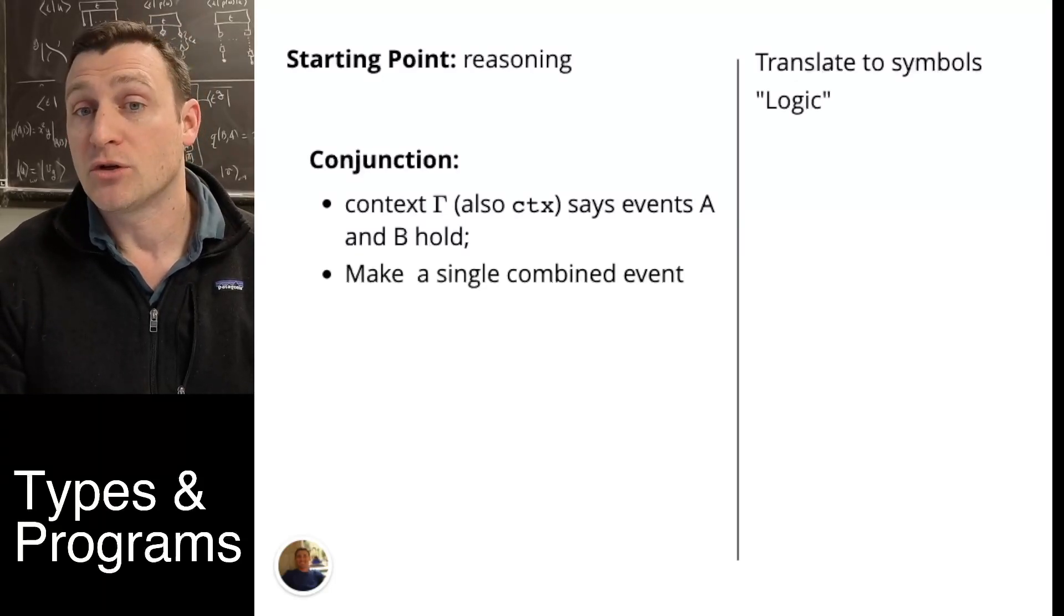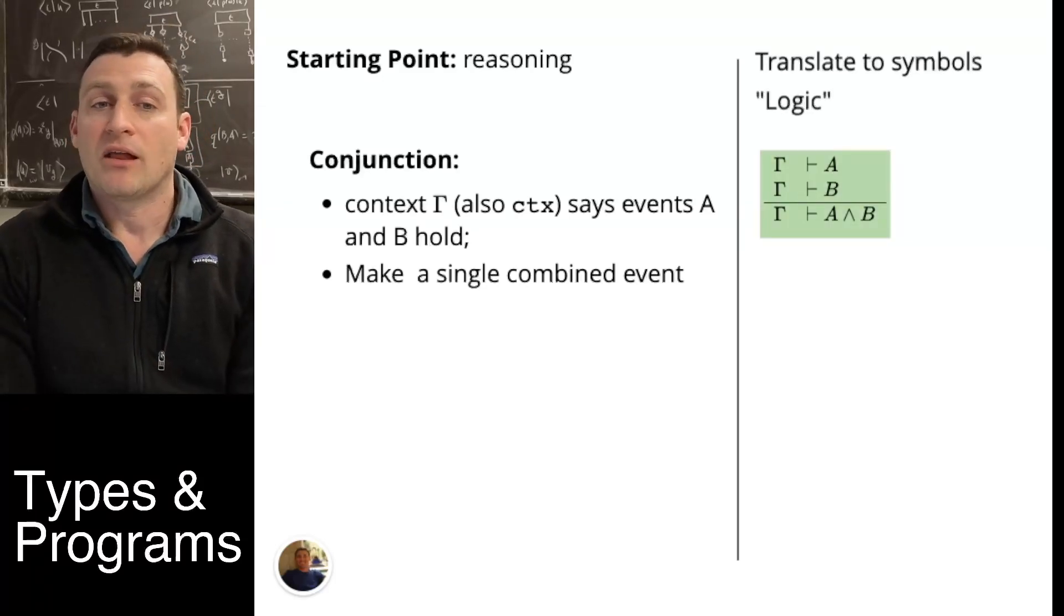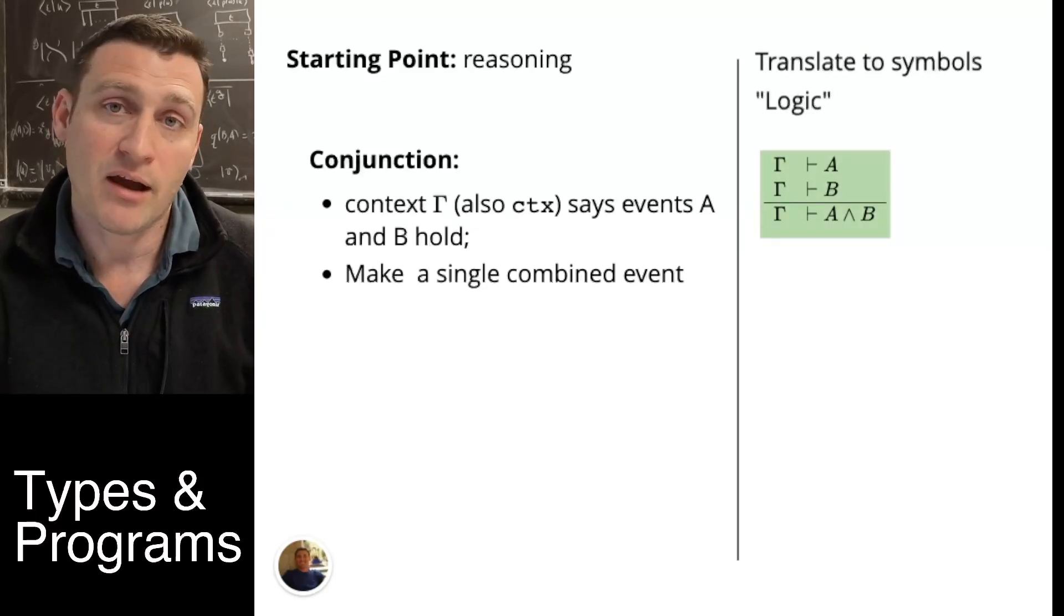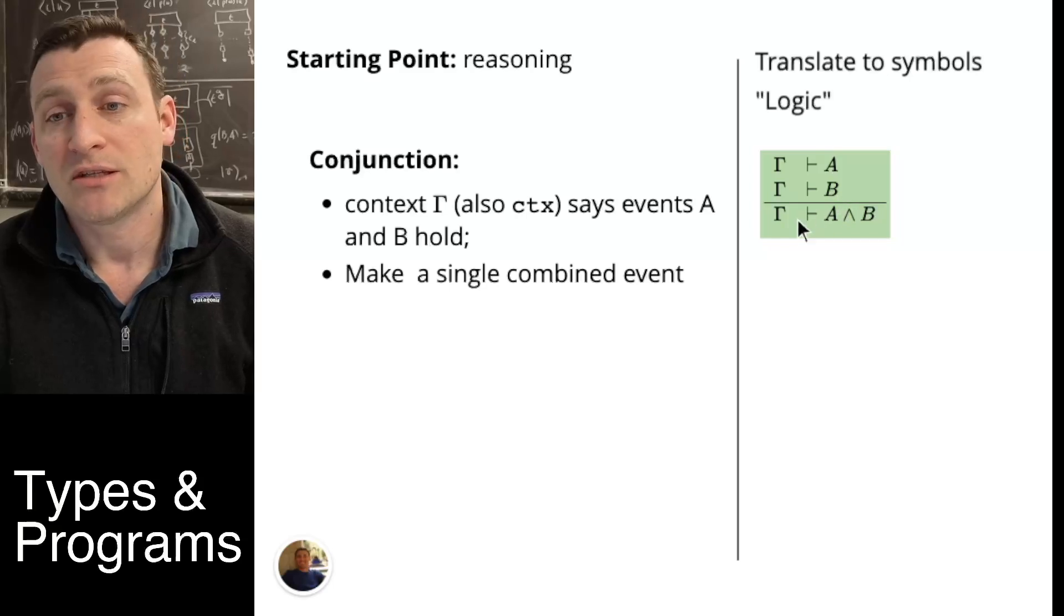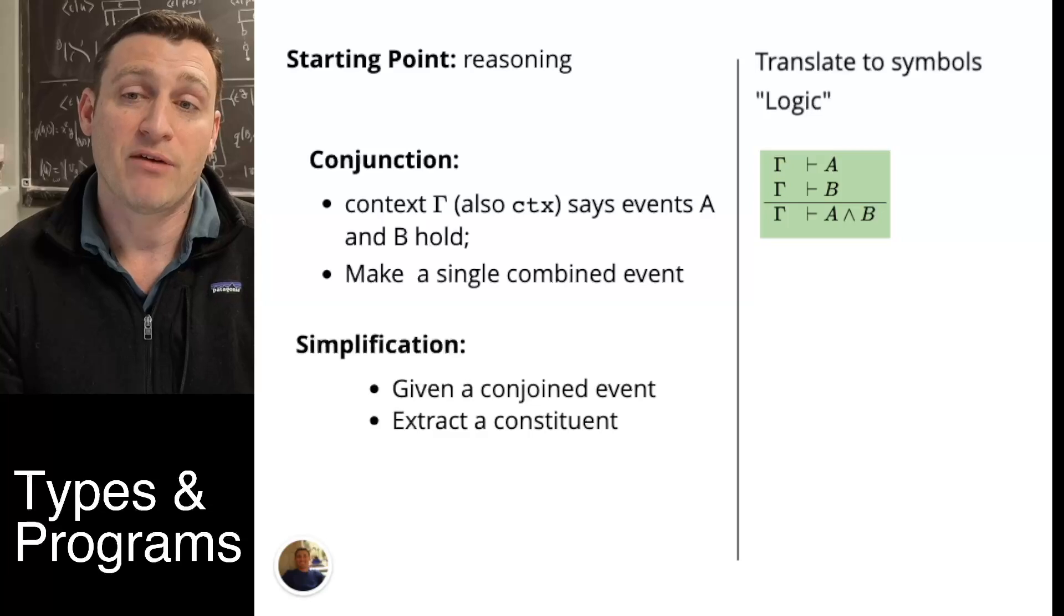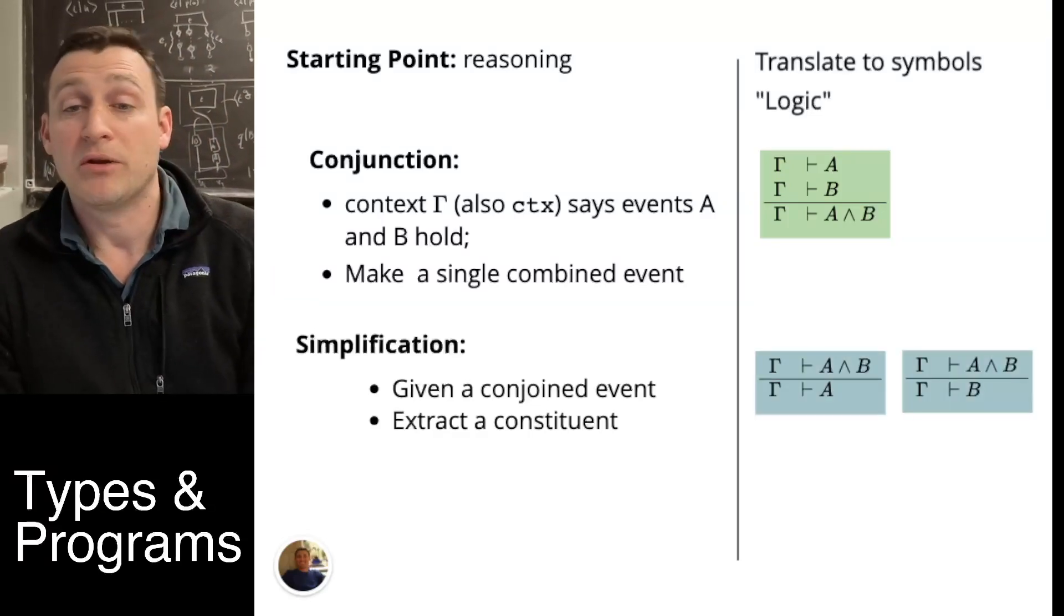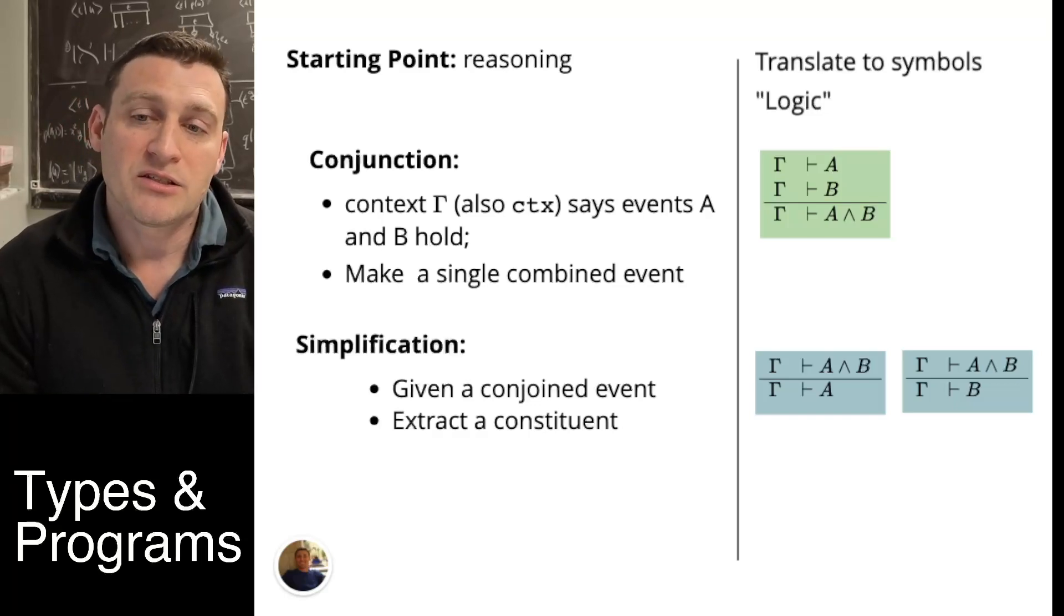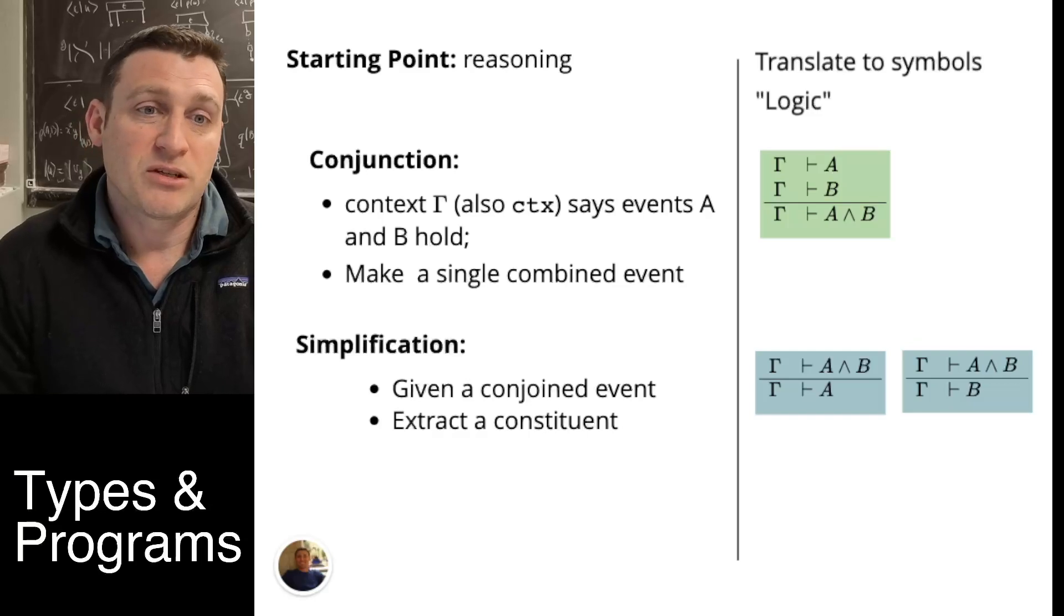And what we use AND for is to create a single valid version of that context. So here's what that might look like in symbols. In the sequent calculus, we would say that we have gamma entails A and gamma entails B. The result is that gamma entails A and B. The simplification then, if we have A and B, we want to get out A or B. And those are the two elimination rules. We extract the constituent A from A and B or the constituent B. Again, this is all subject to it being true.